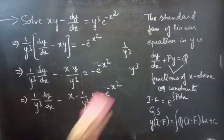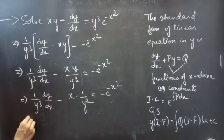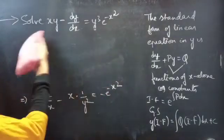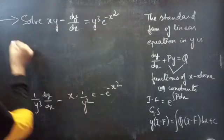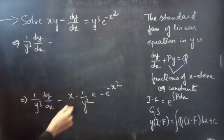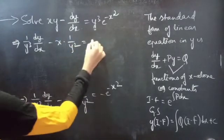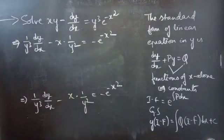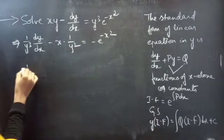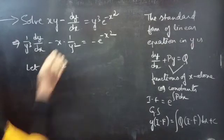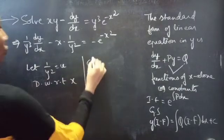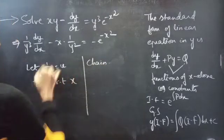Now we make a substitution. The reduced equation is (1/y³)·(dy/dx) minus x·(1/y²) equals minus e^(−x²). Let u = 1/y². Differentiate both sides with respect to x. We will use the chain rule to differentiate this with respect to x.